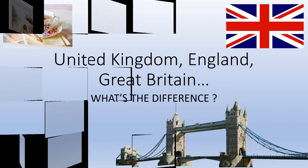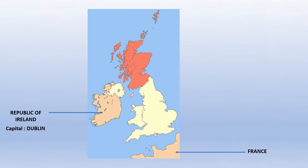First, on this map there are two countries which are not interesting for us today. It's France and the Republic of Ireland, which you can see on the left hand side of the map — the orange country, whose capital is Dublin. This is not part of the British Kingdom. It is a republic, so no link with the Queen.